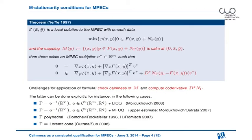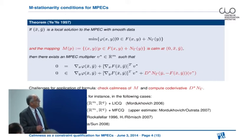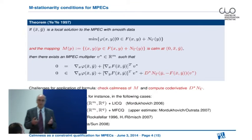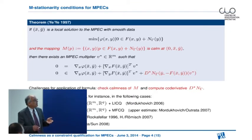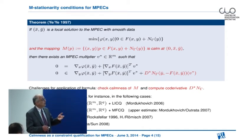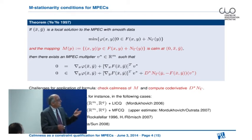Now I want to come to the topic of the talk: the so-called MPECs, mathematical programs with equilibrium constraints with smooth data. I've given here the general form of such an MPEC. We have to minimize a smooth objective phi depending on two variables x and y, everything in finite dimension, subject to a particular constraint set. This constraint set is not defined by equalities and inequalities as in nonlinear programming, but it represents the solution to another optimization problem or more generally a generalized equation.